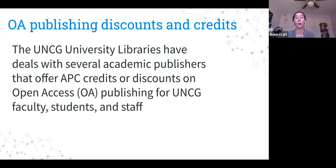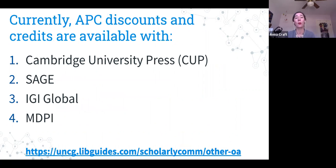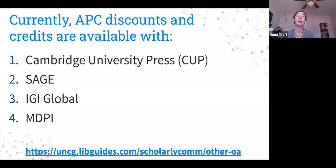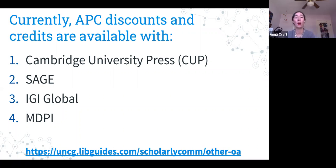At UNCG Libraries, we offer APC credits and discounts with some publishers. With Cambridge University Press, we have APC waivers anyone on campus can use. With Sage, we have a 10% APC discount. IGI Global offers some waivers as well. MDPI, like Sage, offers a 10% discount for UNCG authors. More details are available at the link on this slide.